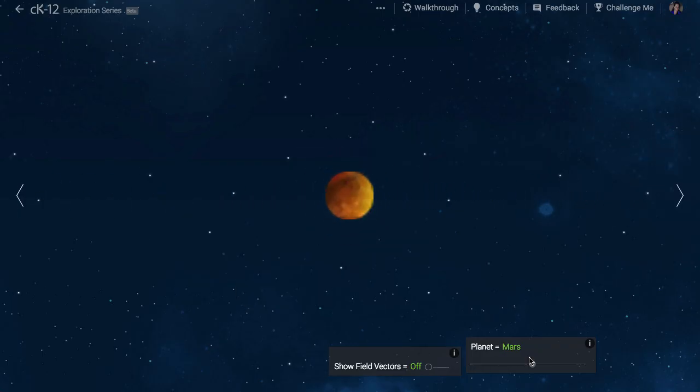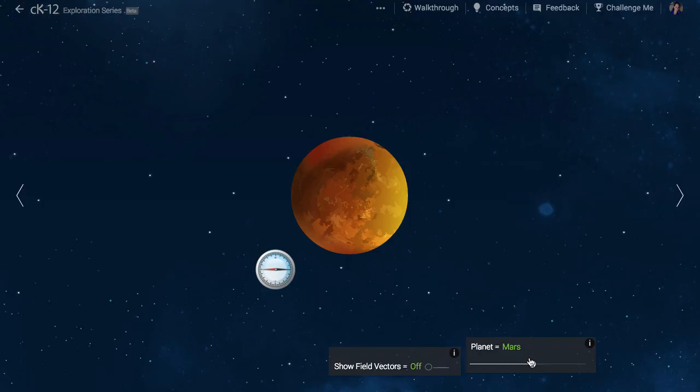When we navigate to Mars, we see that it has such a weak magnetic field that we can't measure it here. This means that the charged particles from the Sun that are deflected by Earth's magnetic field will hit the surface of Mars. If any humans are exploring Mars, this cosmic radiation will present a health problem.